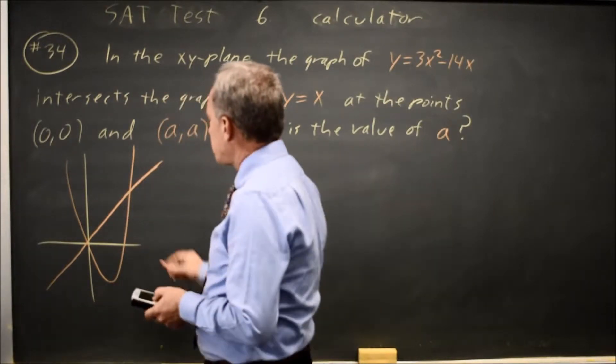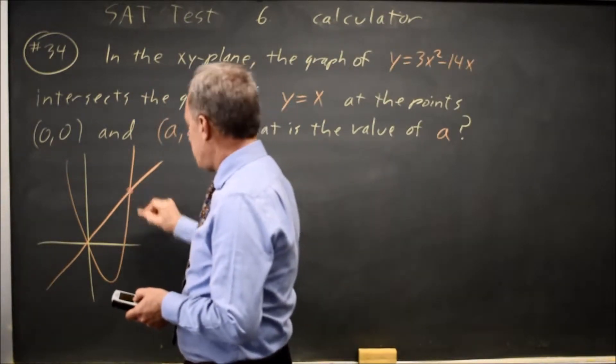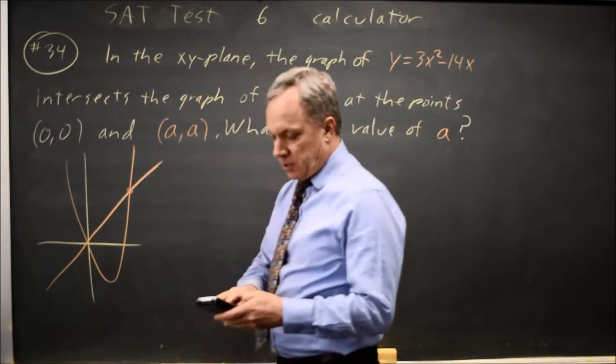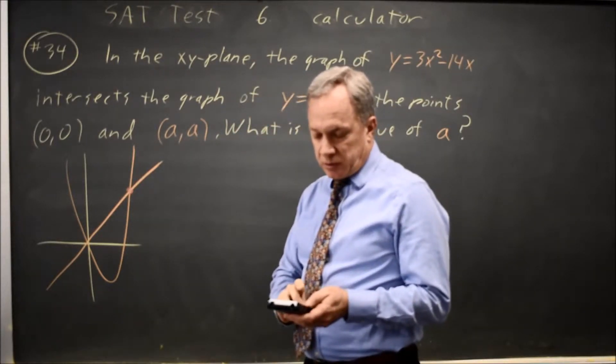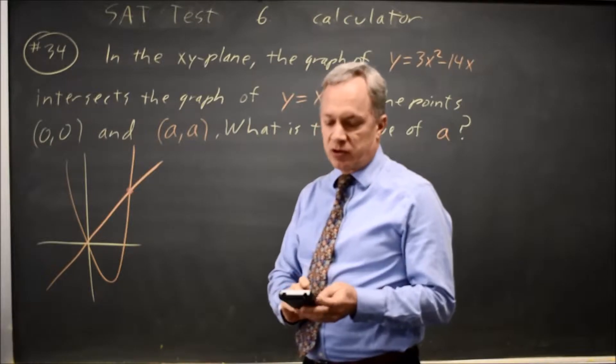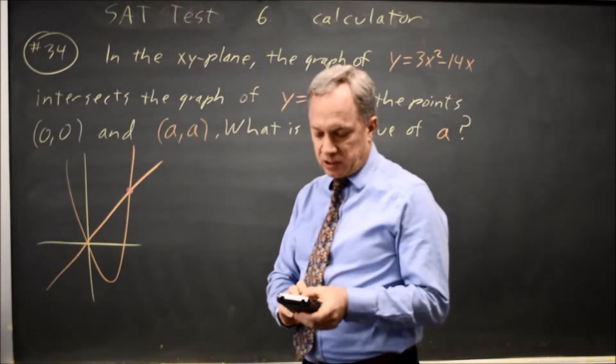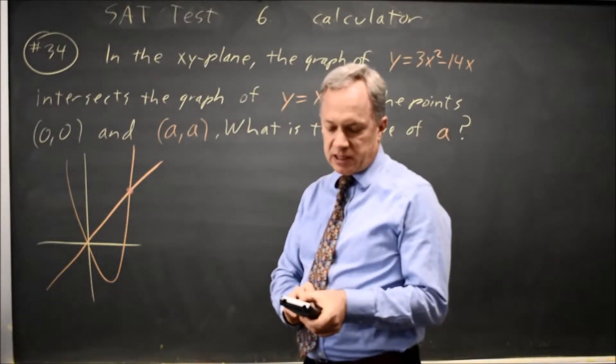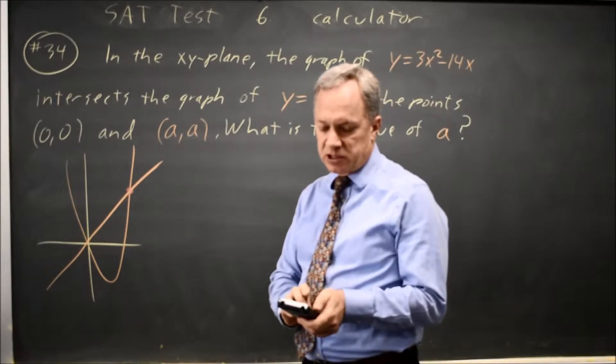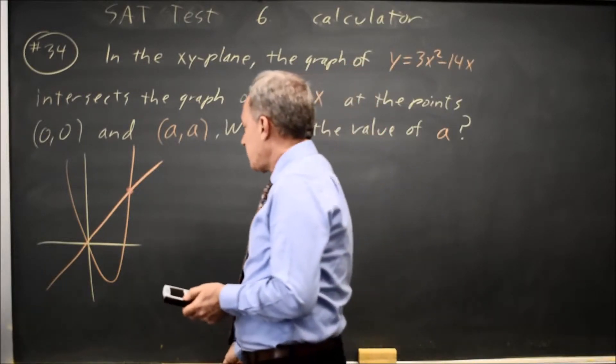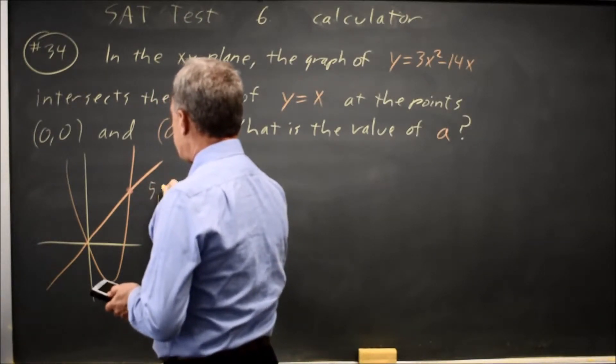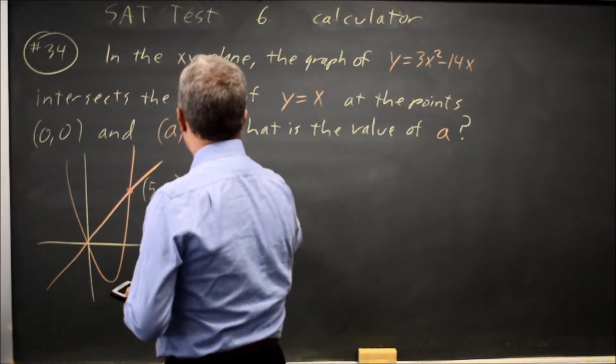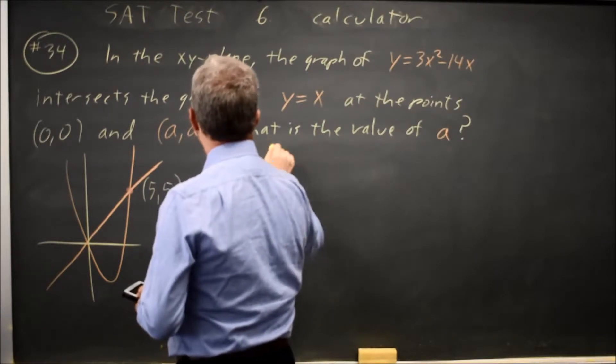Since the point of intersection is on my calculator, I can use the intersect function—second trace for calculate. Option 5 on the TI-83/84 is intersect. Hit enter twice, move closer to that second point of intersection than to the one at the origin, hit enter a third time, and I get the x-coordinate and y-coordinate are both 5. They're asking for A, so A equals 5. I would grid in 5.